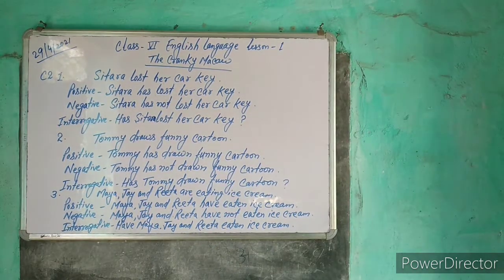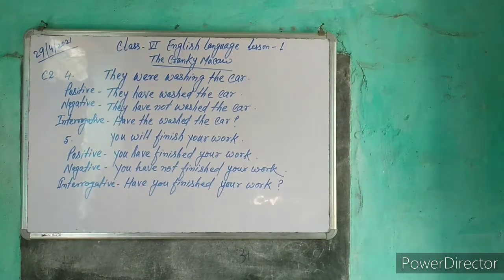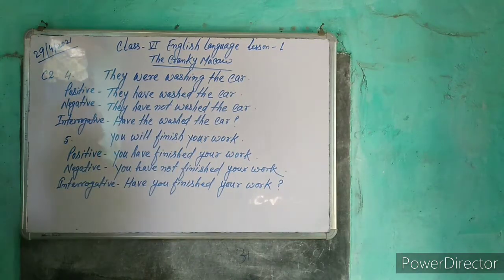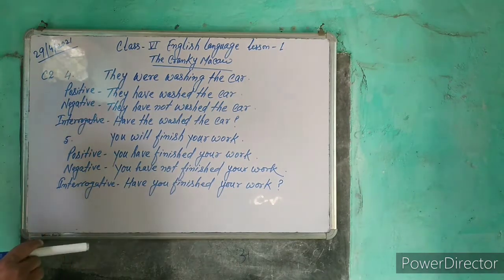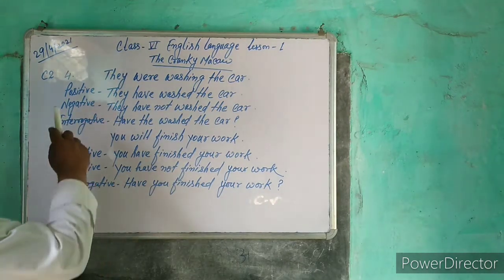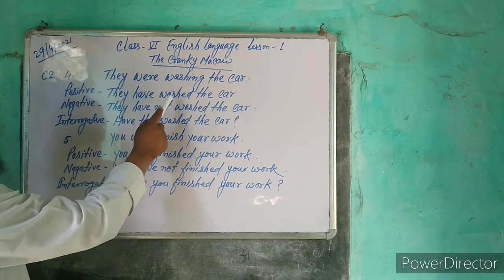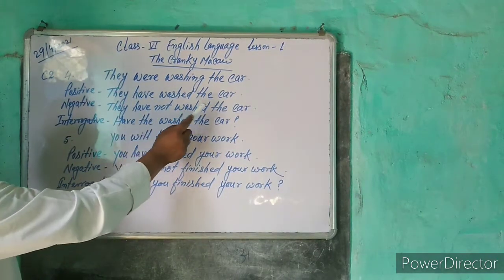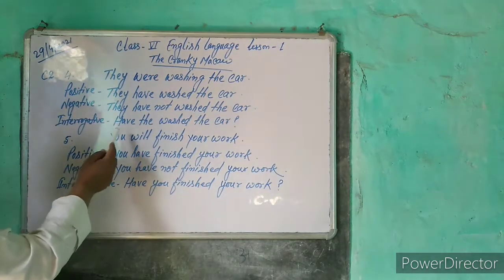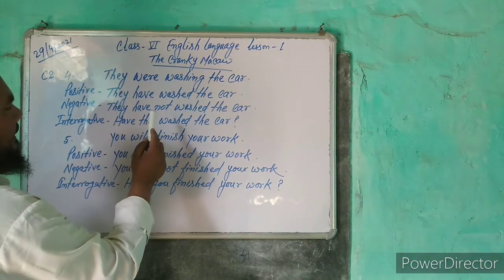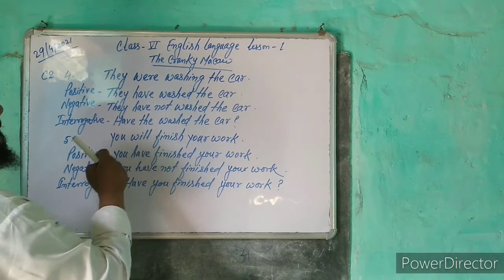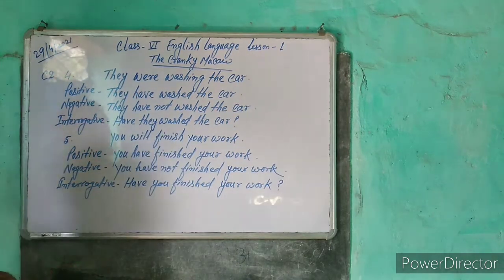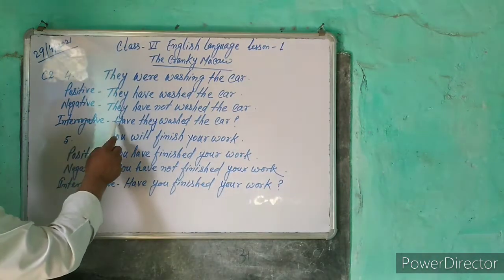The interrogative is: 'Have Maya, Jay and Rita eaten ice cream?' We have sentence number four: 'They were washing the car.' The present perfect tense positive sentence is: 'They have washed the car.' The interrogative is: 'Have they washed the car?'